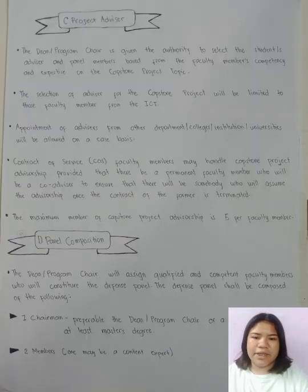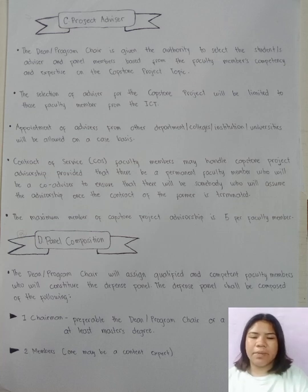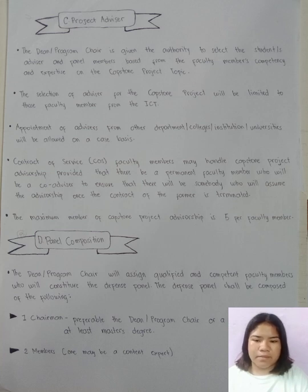Project Advisor: The Dean or Program Chair is given the authority to select the student's advisor and panel members based on the faculty members' competency and expertise relative to the Capstone Project topic. The selection of advisors for the Capstone Project will be limited to faculty members from the ICT department. Appointment of advisors from other departments, colleges, institutions, or universities will be allowed on a case-by-case basis.